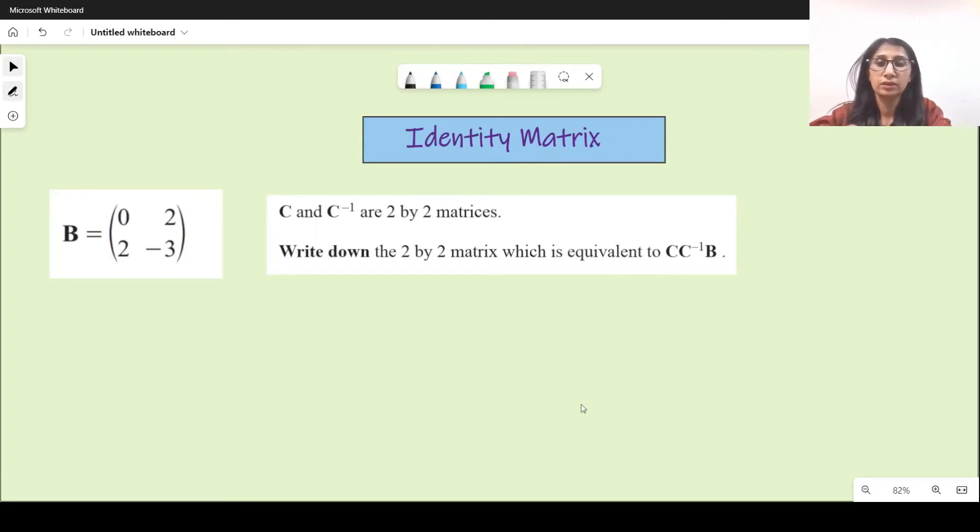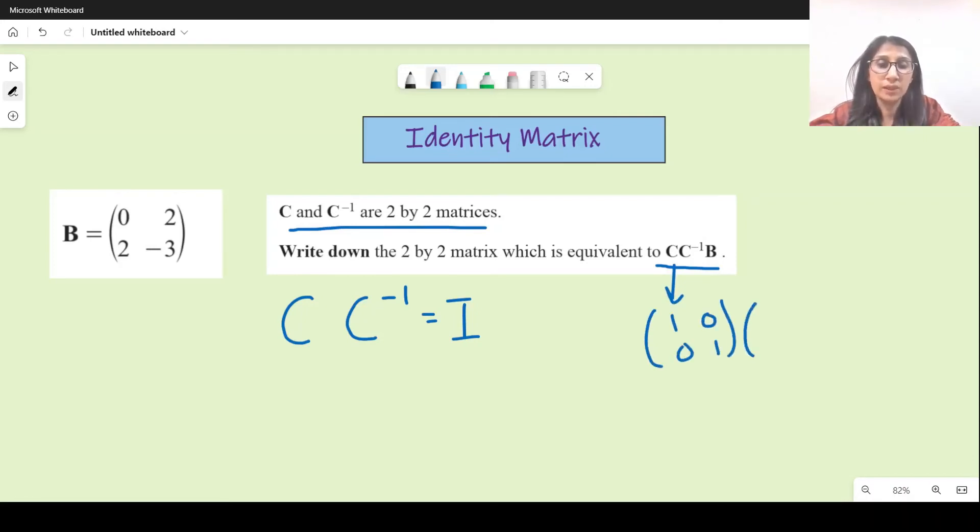Here's another question: C and C inverse are two by two matrices. Write down the two by two matrix which is equivalent to C times C inverse times B. Now if a matrix is multiplied by its inverse, then the answer is just identity matrix. So this becomes identity matrix, which is one one zero zero, times B: zero two two minus three.